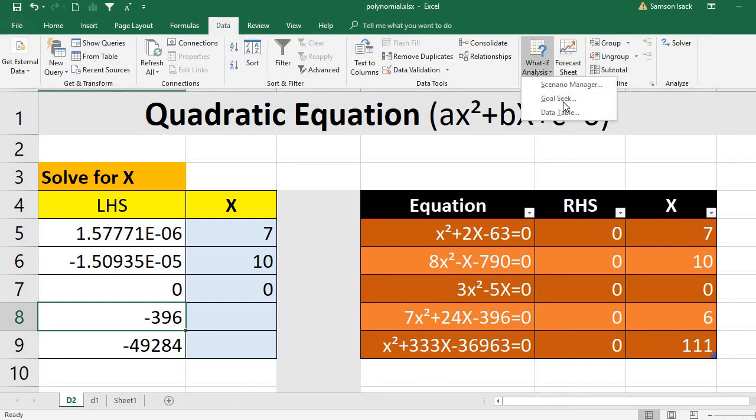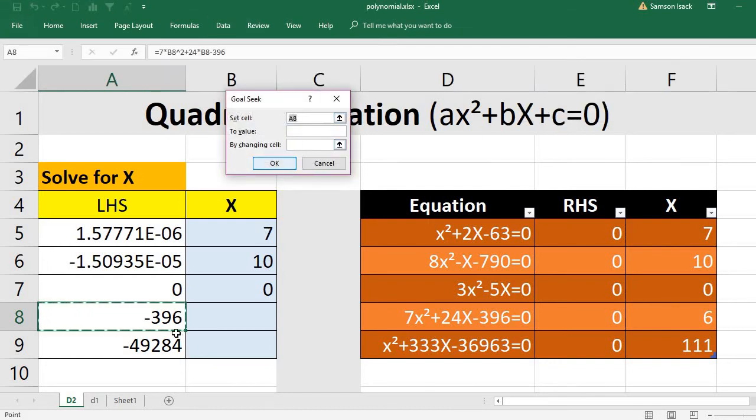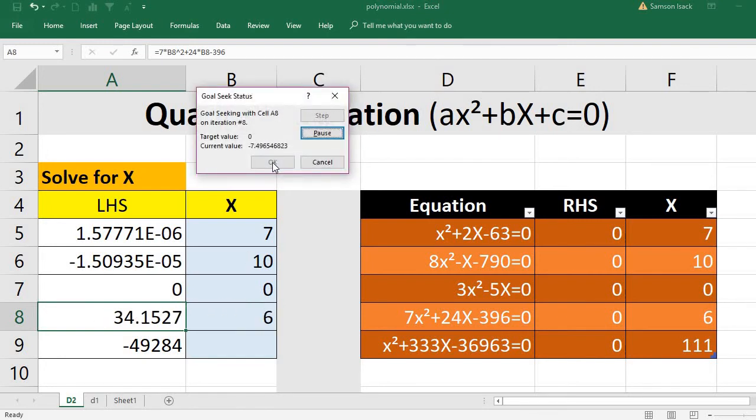So the plus will give one value and minus will give another value. Now, this one. Setting to 0 by changing variable is here. It's obviously 0. Only 0 can satisfy this equation. There could be some other minus values also. We don't know, minus or plus values. But obvious answer is 0.